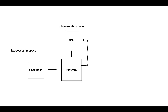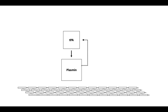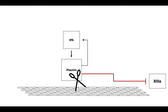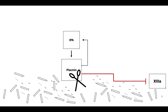Urokinase is also produced in a plasmin-positive feedback loop, where plasmin activates urokinase's precursor, pro-urokinase, to keep itself activated. As plasmin begins to degrade fibrin, it also cleaves factor 13a, which keeps it from cross-linking fibrin. Plasmin is then able to break the fibrin clot into its component fibrin degradation products.